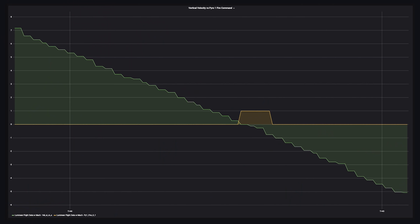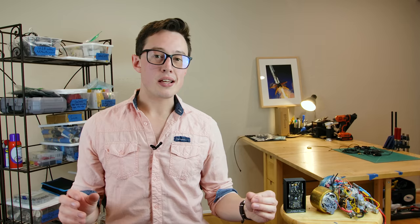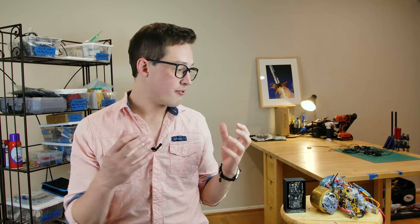AVA logs these things so we can see the command to fire pyro channel 1 right around apogee, which fires our drogue charge. Apart from the RF stuff, both computers on this flight functioned flawlessly and did their job to the best of their ability. Telemetrum and AVA both independently sent the drogue firing command within 0.3 seconds of each other, so they both had a very good agreement on what apogee was.